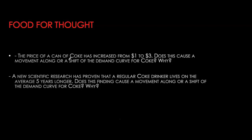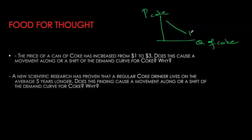Let's look at this example: the price of a can of coke has increased from a dollar to three dollars. Is this a movement along the curve or a shift of the curve? With our original demand curve D1, if price is rising from one to three, this is simply a decrease in quantity demanded — a movement along the demand curve. Note that when we are moving upwards along the demand curve, this is a decrease in quantity demanded.